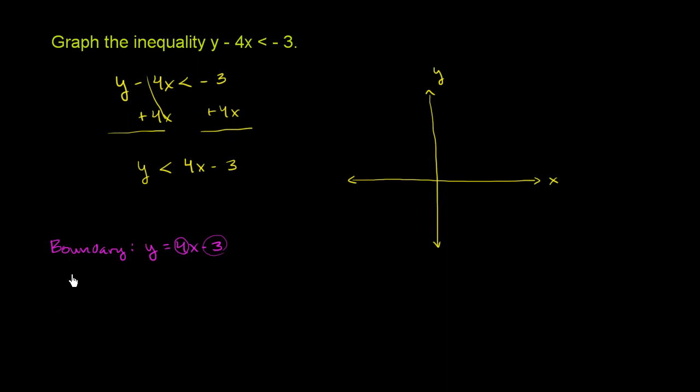So you could say, well, when x is equal to 0, what is y? You get 4 times 0 minus 3. You get y is equal to negative 3. And we knew that because it was the y-intercept. So you have the point 0, negative 3.